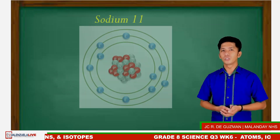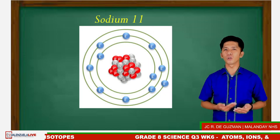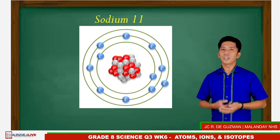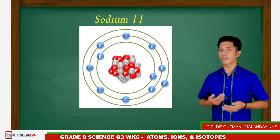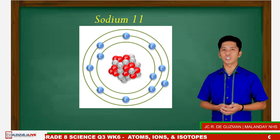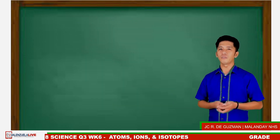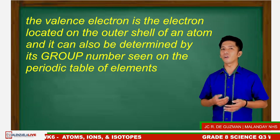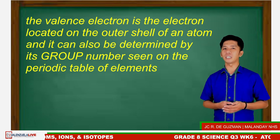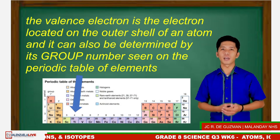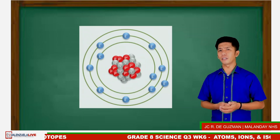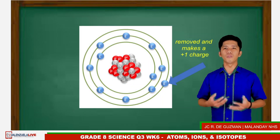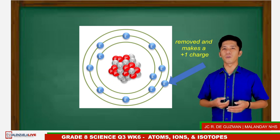For example, sodium-11 has 11 protons and 11 electrons. During chemical bonding with other elements, a charge is needed. That is why sodium, as a metal element, needs to lose its valence electron. The valence electron is the electron located on the outer shell of an atom, and it can also be determined by its group number seen on the periodic table of elements. Since sodium-11 has one electron on the outer shell, this electron is being removed, which makes a positive one charge on it.